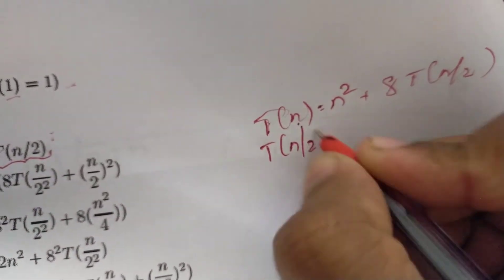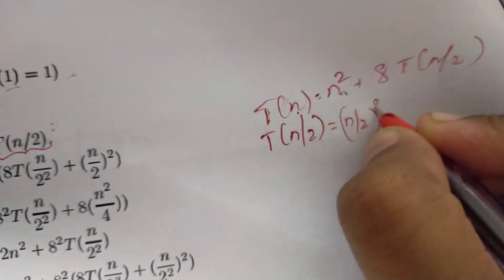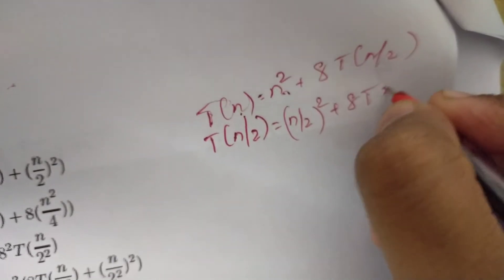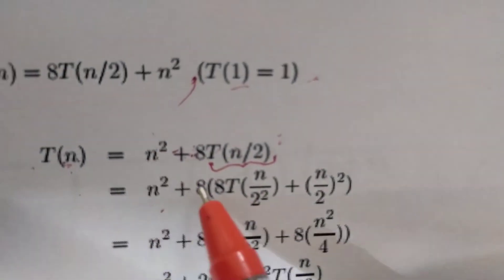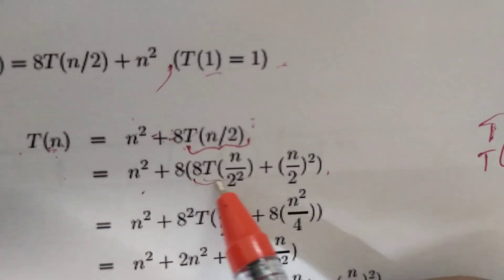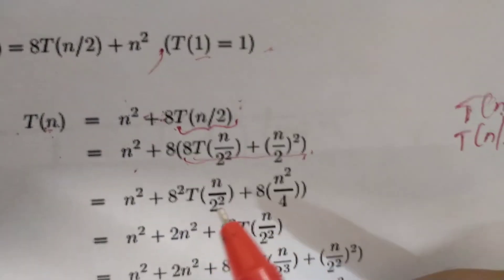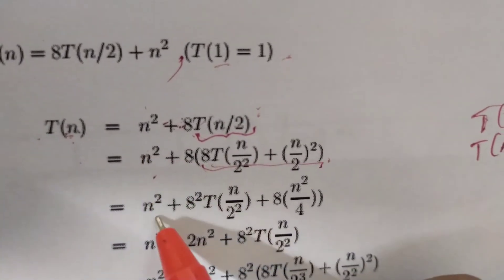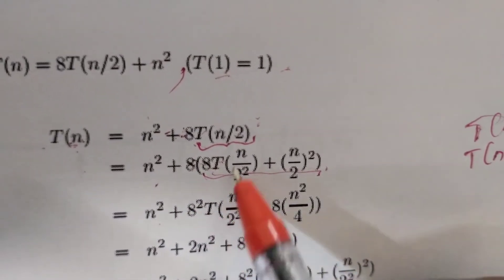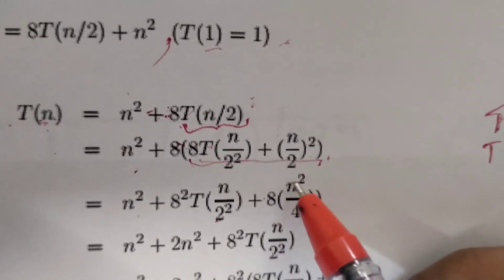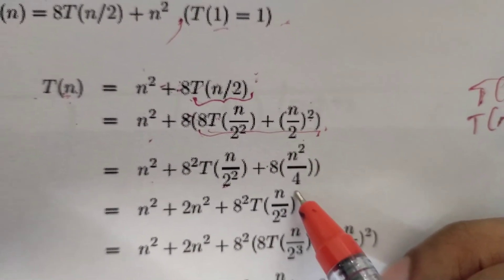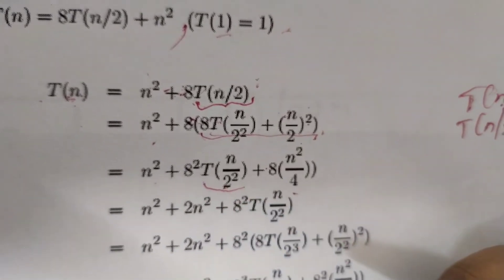Expanding further: T(n) = n² + a·[n/2)² + aT(n/4)]. So T(n/2) = (n/2)² + aT(n/4). This gives us n² + a·(n/2)² + a²·T(n/4). We then substitute T(n/4) = (n/4)² + aT(n/8), giving us the next expanded term with a²·(n/4)² + a³·T(n/8).